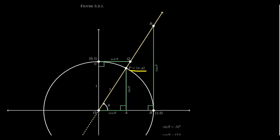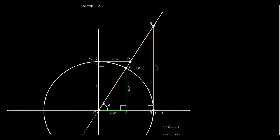We have point P, whose coordinates are x and y, where x coincides with cosine and y coincides with sine. Associated to this point P is a right triangle. Let's call the origin O — that's the center of the circle and one vertex of the right triangle. Vertex A is where the right angle is, and then there's point P. Triangle AOP has one side of length cosine theta, one side of length sine theta, and the hypotenuse is just the radius — it equals one.